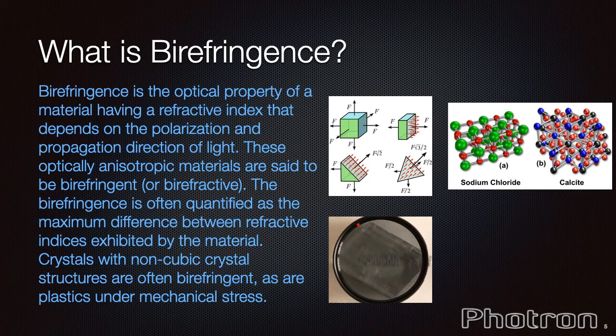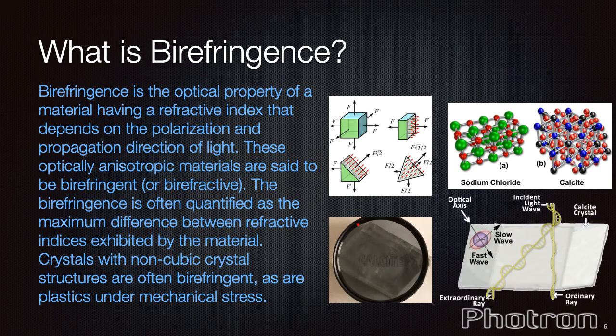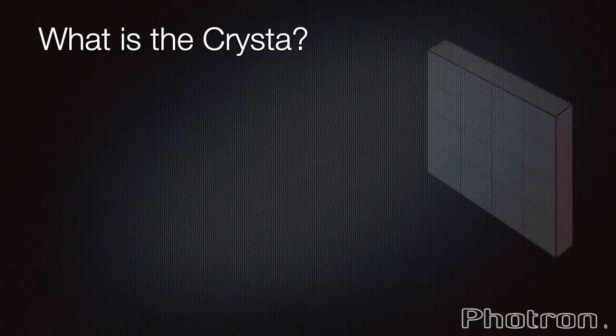And these rays are dependent on the refractive index of the material. One of these rays will typically travel slower than the other, and this difference is defined as the retardation and is typically measured in nanometers. Birefringence, or double refraction, is the optical property of a material having a refractive index that depends on the polarization and propagation direction of light.